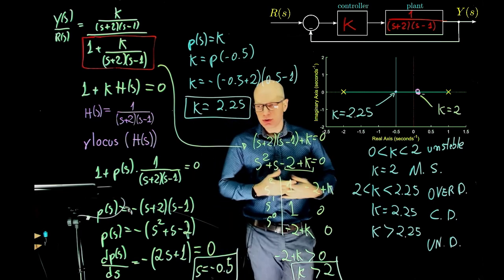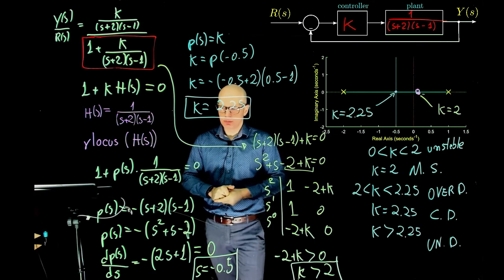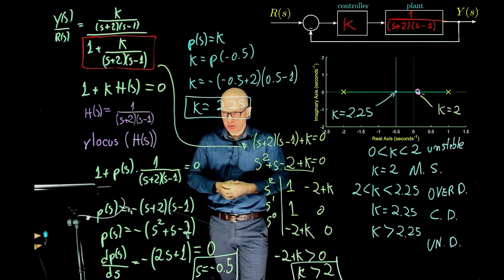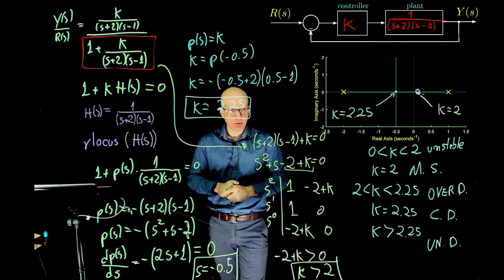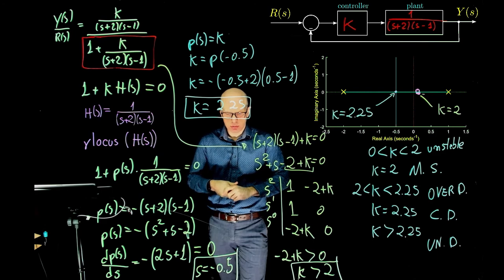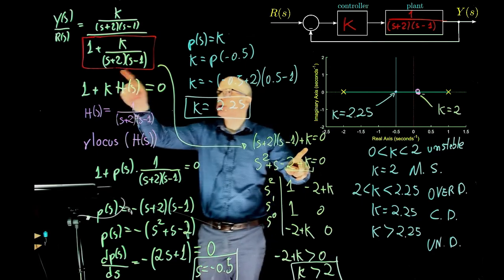Later this will come in handy when we change the controller to something other than a simple proportional gain. We could add a zero or another pole to the controller, and that would completely change the root locus shape. This sort of analysis will guide us in the design process of finding the best controller to stabilize an otherwise unstable plant.